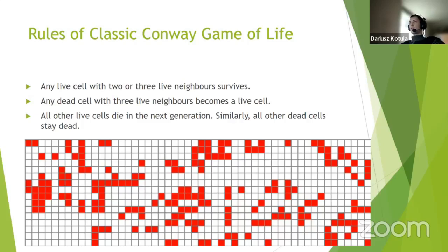There are three main rules. The first is about living cells: if a live cell has two or three neighbors, that cell stays alive — it survives. Another rule describes a dead cell which, with exactly three neighbors, comes alive and changes its state to life. The last rule applies to all other cells that either die or remain dead. As we can see, the rules of the classic Game of Life are fully deterministic.